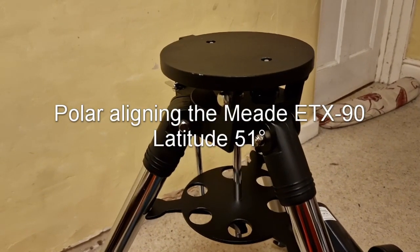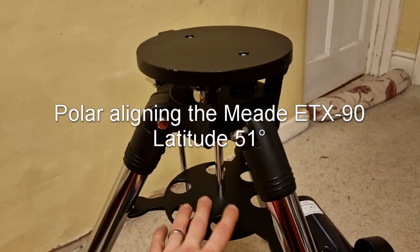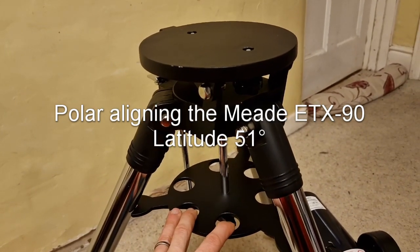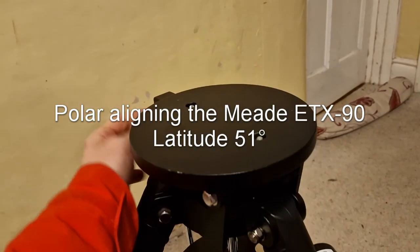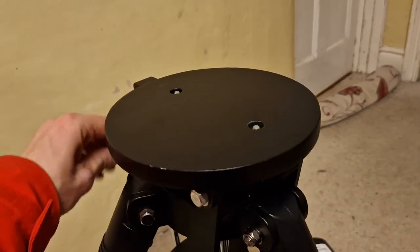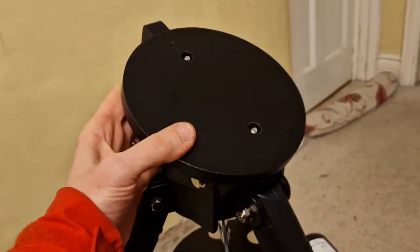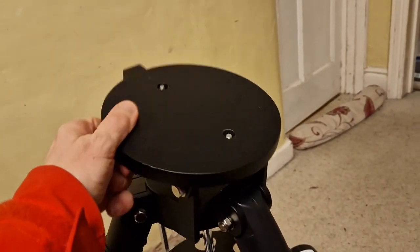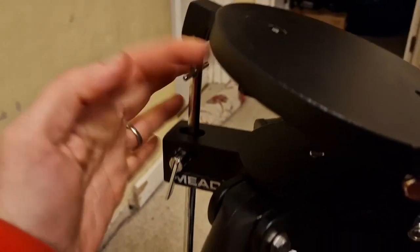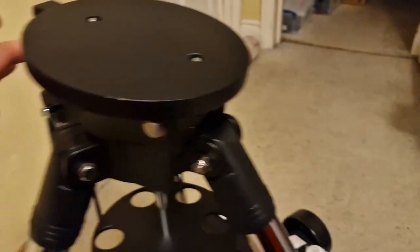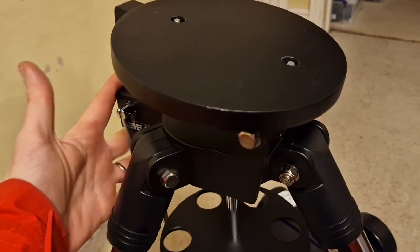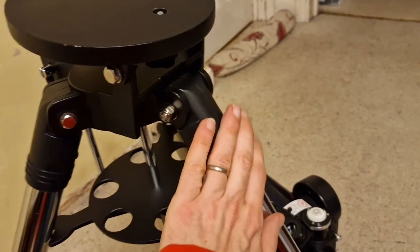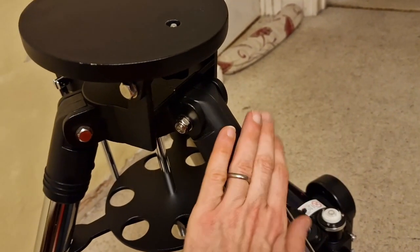To set up the ETX-90, put the tripod together with the little shelf in here and arrange it so you've got the adjusting bar just at the back. That is effectively the south side and this is the north side, so the leg opposite is the north side and it's where the plate tips towards.